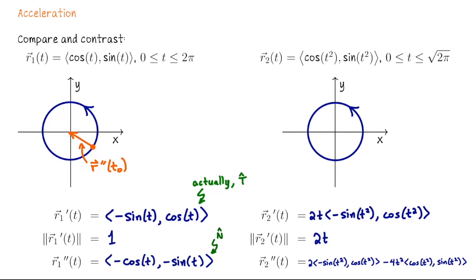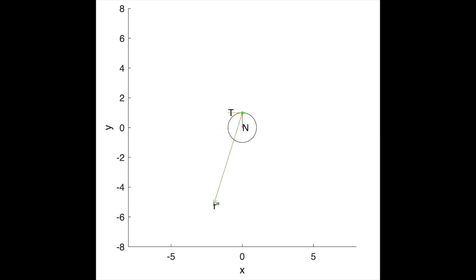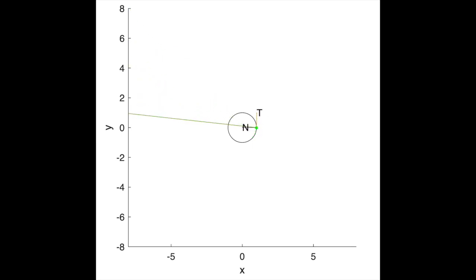Here is the curve traced out for t from 0 to √(2π). The unit tangent and unit normal vectors live exactly where you'd expect — T pointing in the direction of motion, N pointing into the bend. Unlike the first parametrization, the acceleration vector here does not point directly along N; you can see how it's situated relative to T and N.